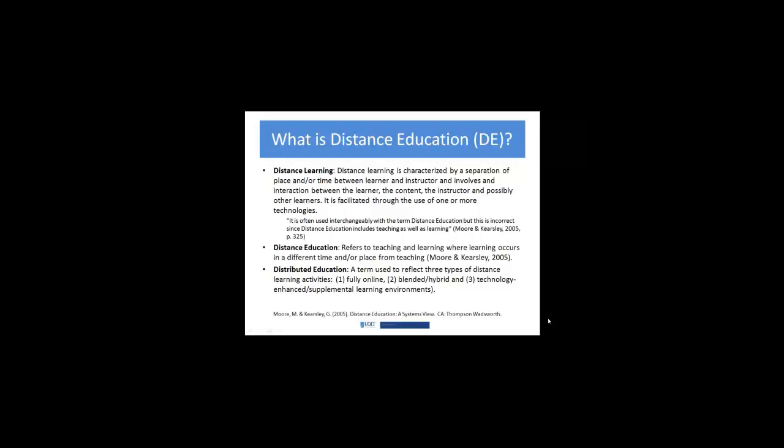They also discuss distributed education as a term reflecting three types of distance learning. Think of a hierarchy: distance education refers to teaching and learning in a different time and/or place; distance learning is the separation between the learner, instructor, and interactions; and distributed education encompasses all kinds of different delivery methods, which we'll get into in the next few videos.